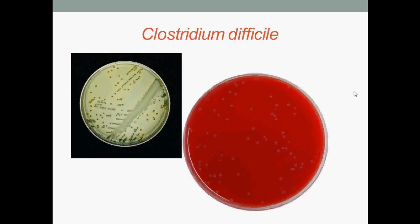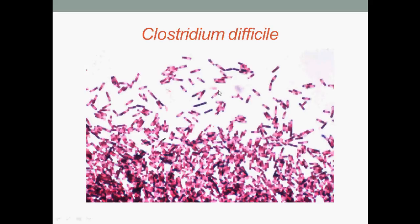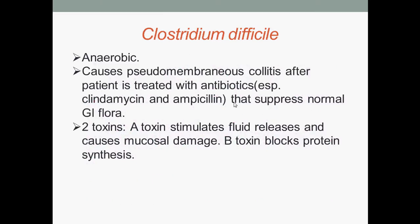Here we have colonies of Clostridium difficile, and Clostridium difficile under microscopic view. Clostridium difficile are anaerobic and cause pseudomembranous colitis — this occurs after a patient is treated with antibiotics, especially clindamycin and ampicillin, which suppress normal gastrointestinal flora. In rare cases, pseudomembranous colitis can progress to toxic megacolon, which can be life-threatening.